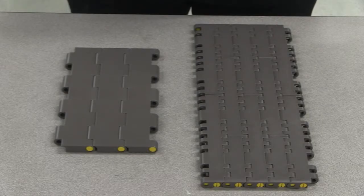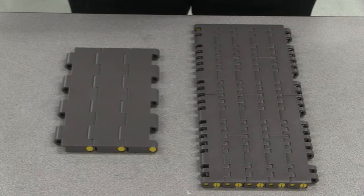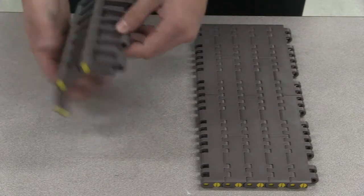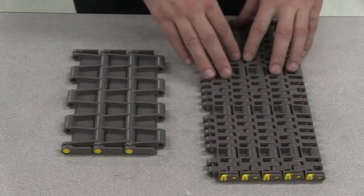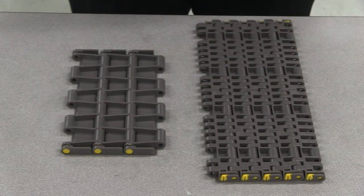The easiest way to identify your MatTOP chain is to locate the chain series number. On most MatTOP chains, there will be a chain series number molded into the sprocket pockets of the chain.